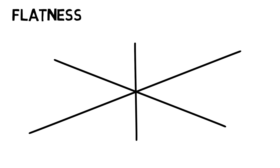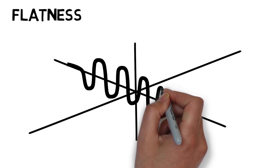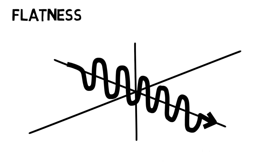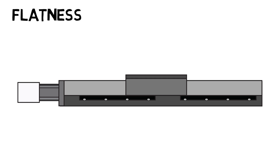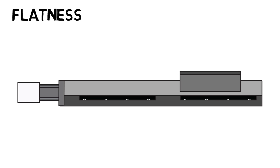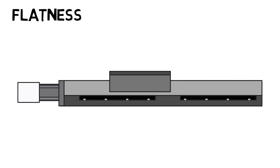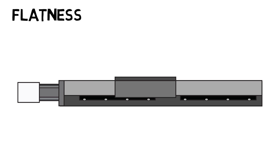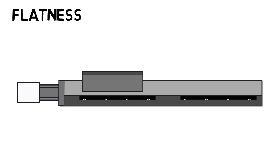Flatness can also be called vertical straightness. Similar to straightness, flatness is defined as the deviation from the true line of travel perpendicular to the direction of travel in the vertical plane. If you look at the stage from the side, this would appear as deviation up and down as the stage moves through its travel.